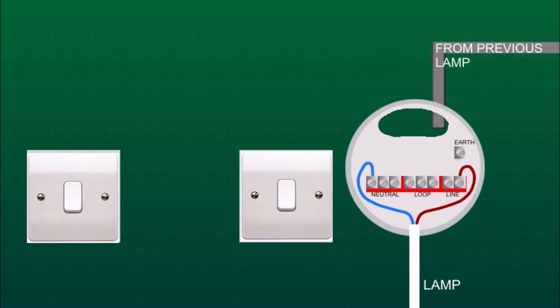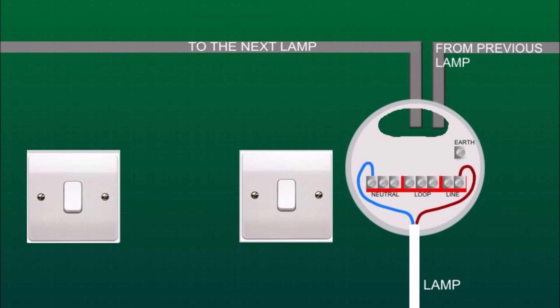Also on the top you see two twin and earth cables. This one on the right is from the previous lamp, or in this case from the consumer unit. And this one on the left is going from this ceiling rose to the next one in a different room.